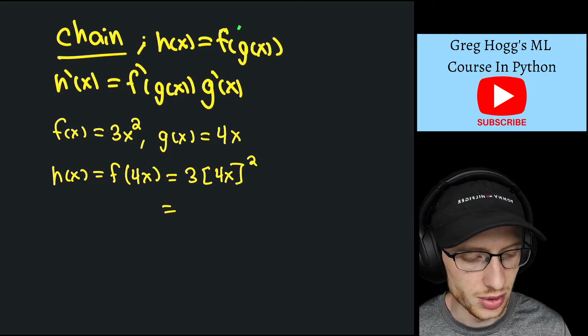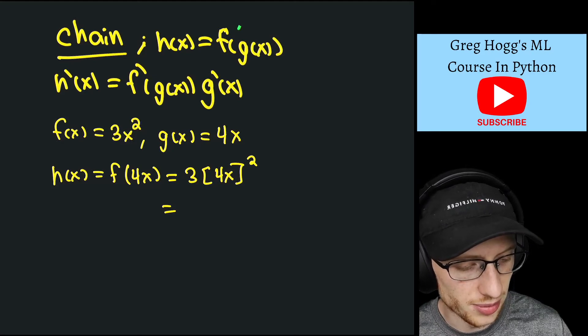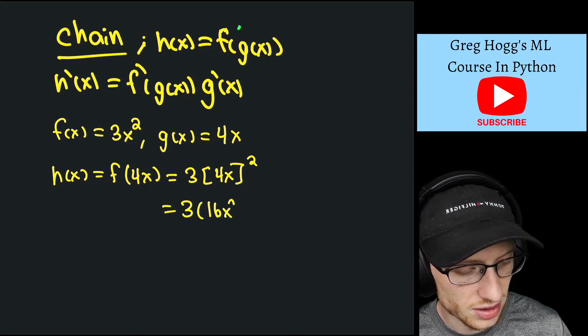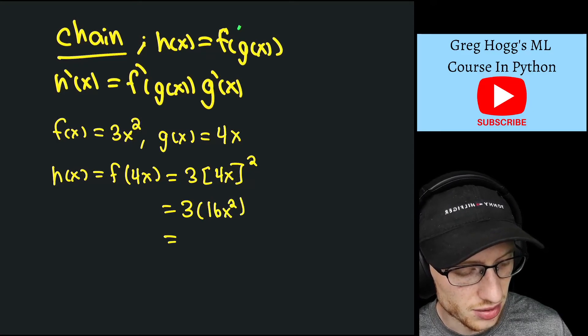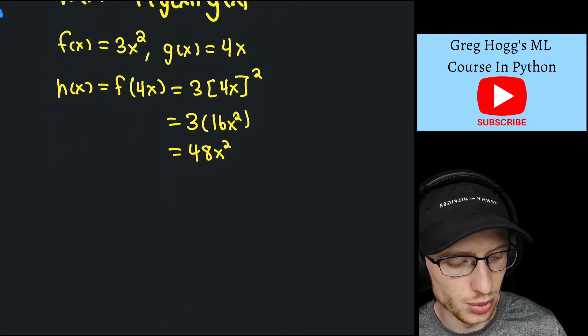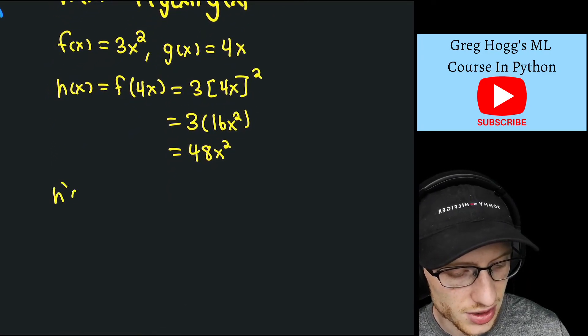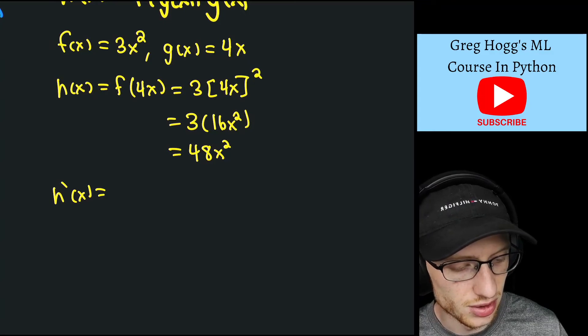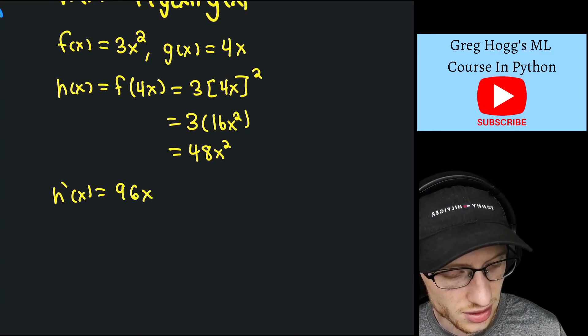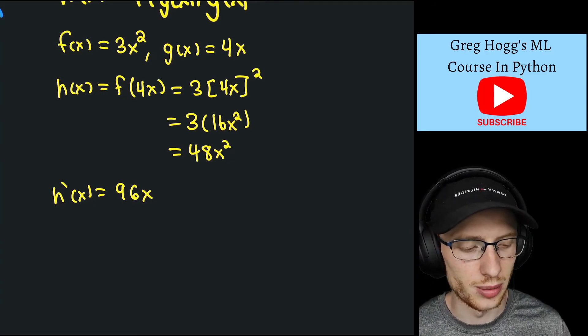Which again, if we were just to ignore the rule, we can simplify this right away, we have 3 times 16x squared, which is 48x squared, and very simply, without even using the rule, we could calculate that h'(x) is equal to, you take the 2 down, you get 96x. So that's the derivative that we want to make sure we get.